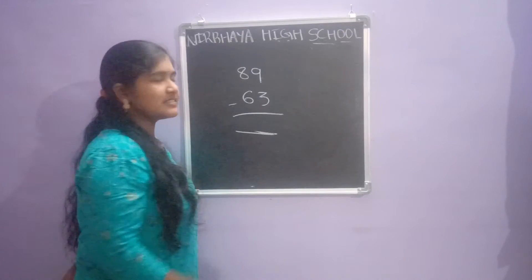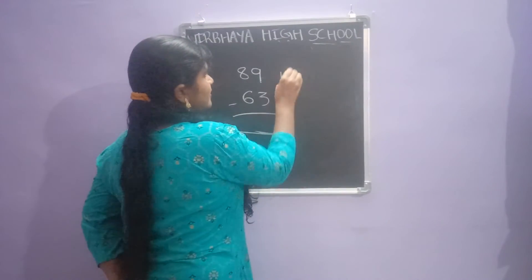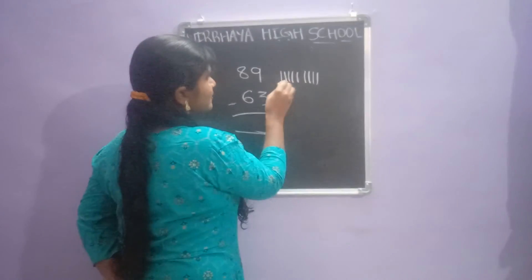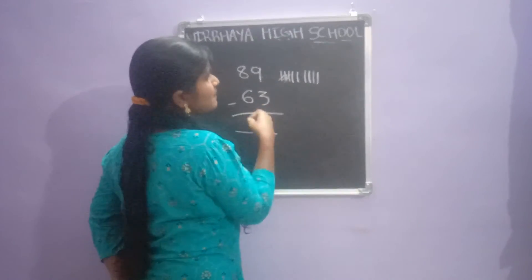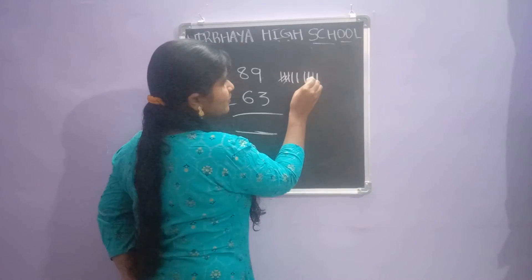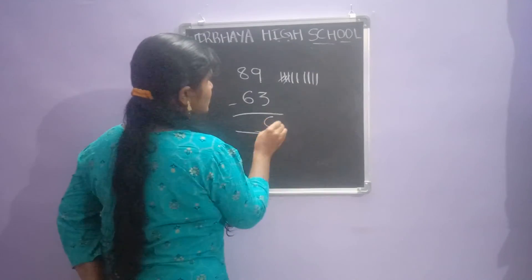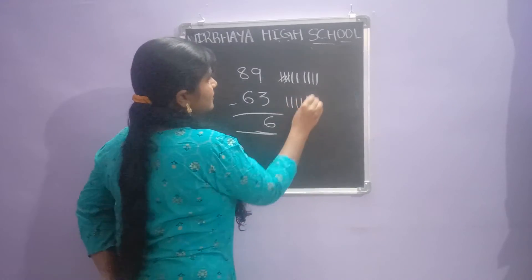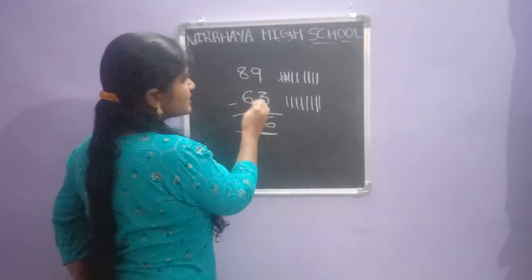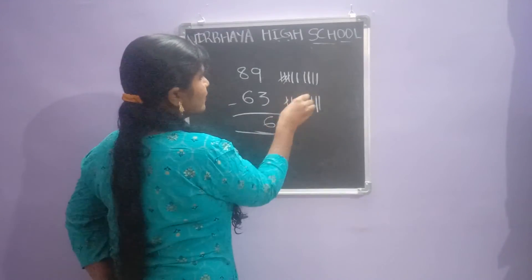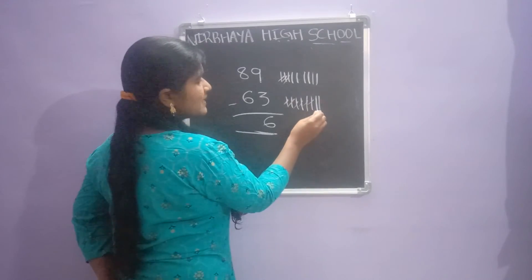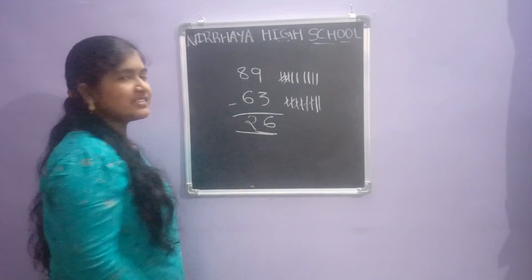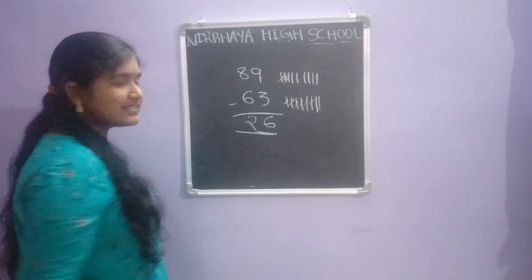Nine minus three: draw 9 lines and remove 3 lines. Remaining lines are 1, 2, 3, 4, 5, 6 — so write 6. Next: draw 8 lines and remove 6 lines. Remaining lines are 1, 2 — so twenty-six. Therefore eighty-nine minus sixty-three equals twenty-six.